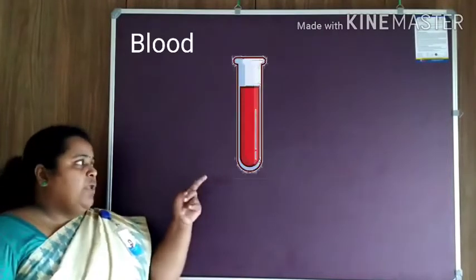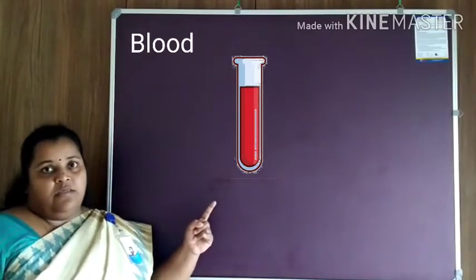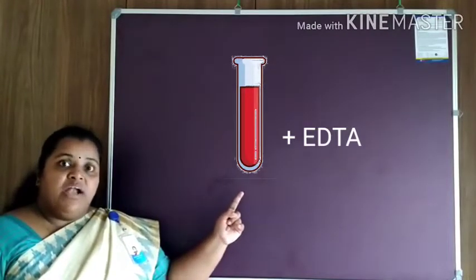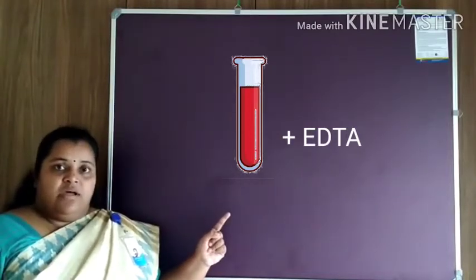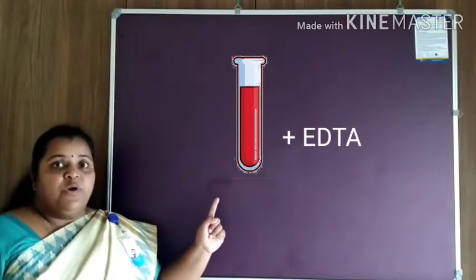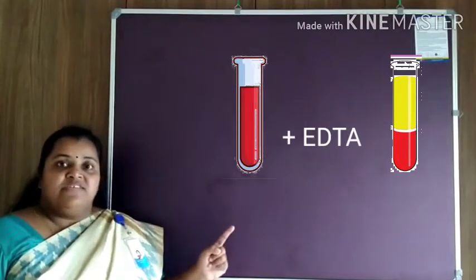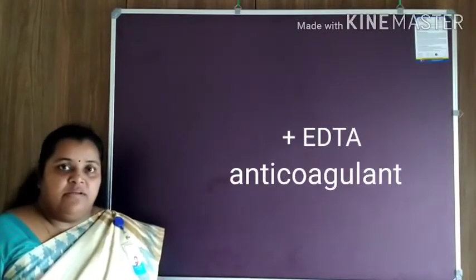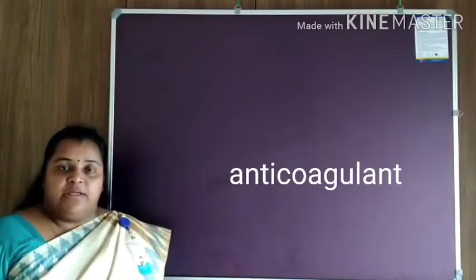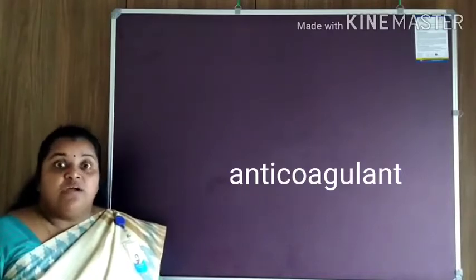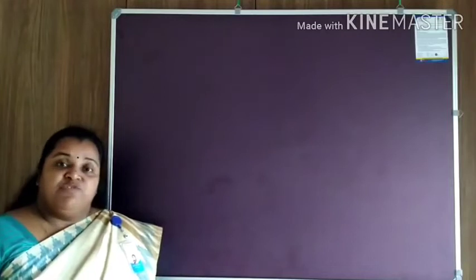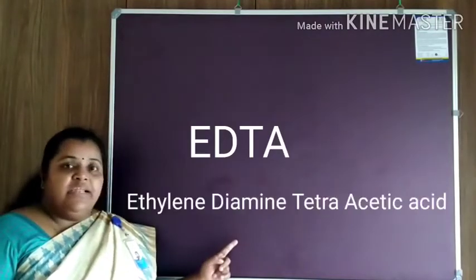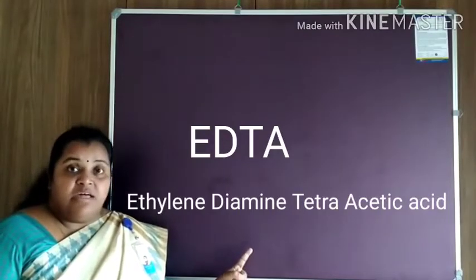For that, we need a test tube which contains blood. Add EDTA to the test tube and leave undisturbed for a few minutes. After a few minutes, you can see that the components of blood get separated as two layers in the test tube. EDTA is an anticoagulant of blood — a chemical which prevents clotting of blood. The full form of EDTA is ethylene-diamine-tetra-acetic acid.